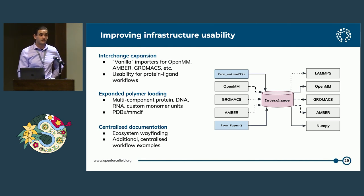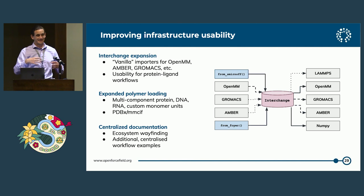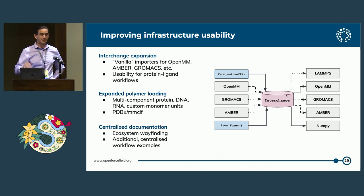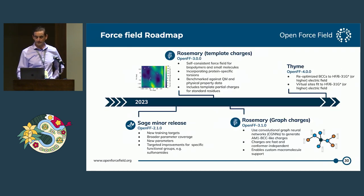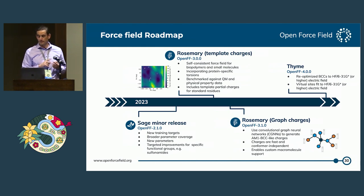In the coming year, we're hoping to improve infrastructure usability a lot. Right now, our protein force field application is a little bit slow. We're a little bit restricted in what we can load before we apply parameters — getting into a Kekule structure suitable for parameter assignment. We're doing some work to load more general polymers and become more useful for protein-ligand workflows, because that's what a lot of our pharma partners really want. To reiterate, our next major releases: a self-consistent small molecule and protein force field in Rosemary, graph charges in Rosemary 3.1 to make charge assignment faster and more extensible, and we'll be adding virtual sites.